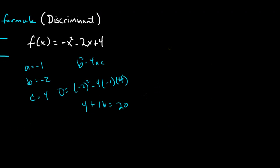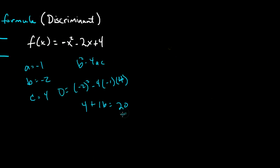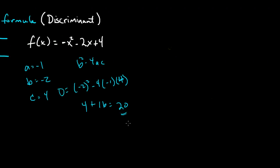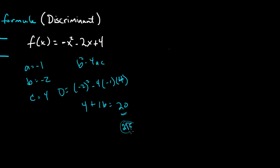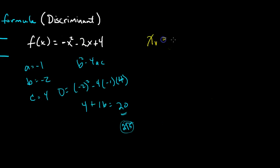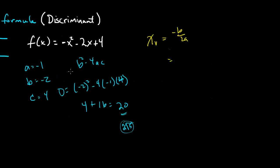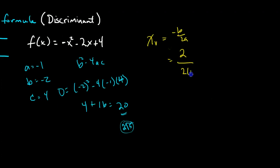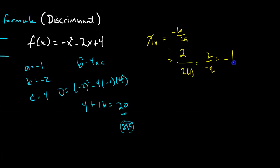The roots are going to be somewhere around a little less than negative 3 and a little more than 1. These will be irrational roots because 20 is not a perfect square — the square root of 20 simplifies to 2 radical 5, so we have to approximate. Now let's find x at the vertex using negative b over 2a. That gives us positive 2 over 2 times negative 1, which is 2 over negative 2, or negative 1.